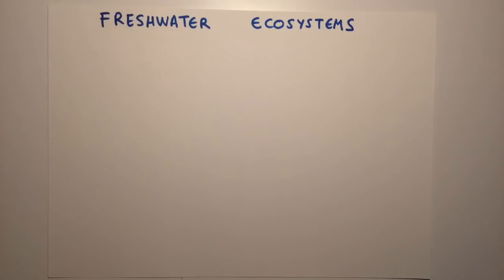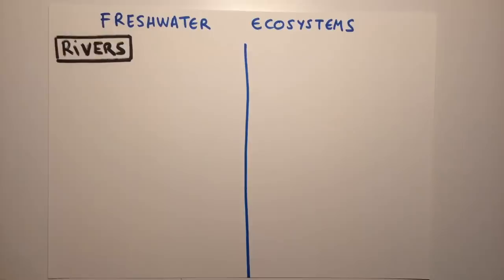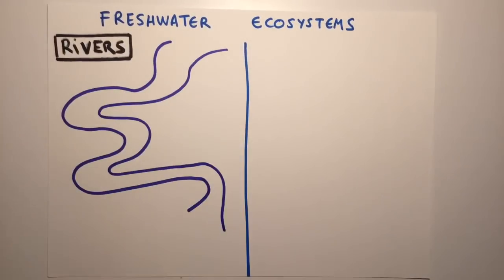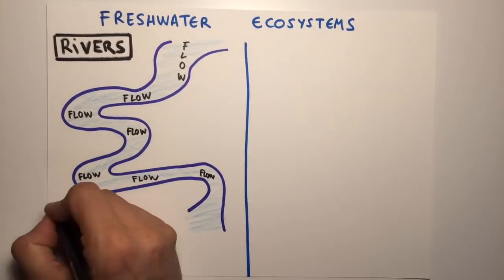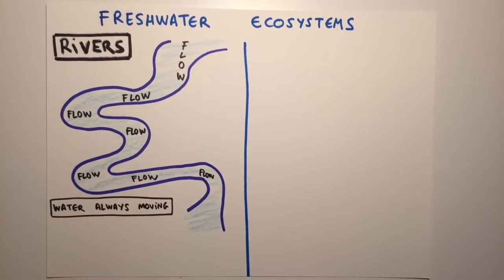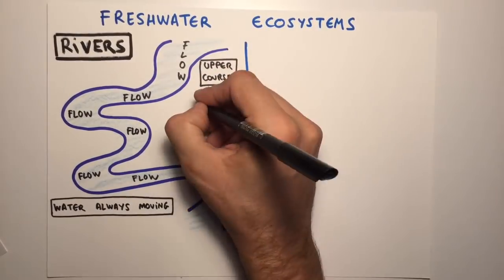Apart from the marine ecosystems, there are the freshwater ecosystems. Here, the water has a very low salinity — no salt in it. Rivers and lagoons are freshwater ecosystems.